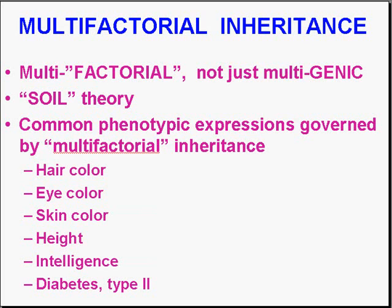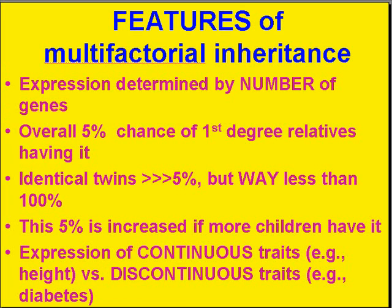When you think of common phenotypic expressions governed by multifactorial inheritance, think of hair color, eye color, skin color, height, intelligence. We all know that people with these traits are generally more likely to have closer relatives who share them, but it can't really be boiled down to one gene. The general feature of multifactorial inheritance is that it's expressed by a number of genes, and therefore you can only talk about chances rather than specific absence or presence of disorders.